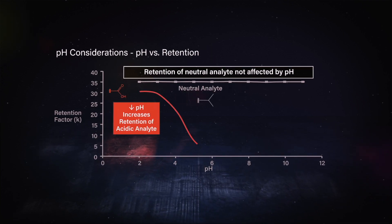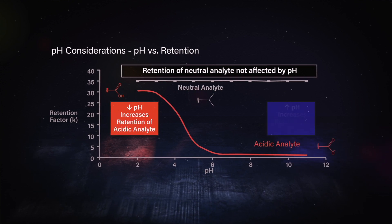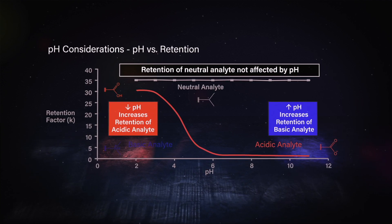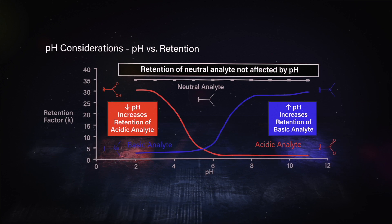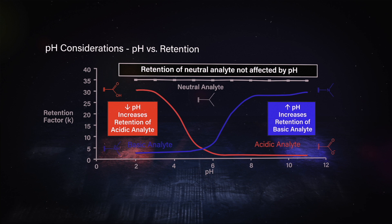So as you can see in red, you have acidic compounds. And at low pH, those acidic compounds become unionized or more hydrophobic. So in reverse phase chromatography, they become more retained.